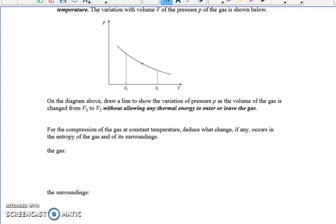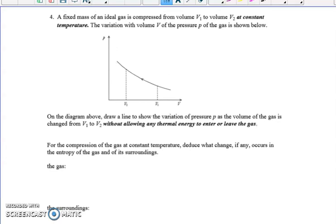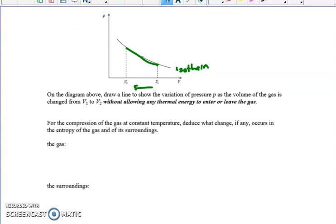So let me do one more here and then I'll ask you to try the last of the problems on your own. So we'll go back to a PV diagram. Let me just check something here for a second. All right, I'm good on time. So we have a fixed ideal gas that's compressed from volume one to volume two. So we have something like that and the volume is going down, that's why it's a compression and it's at constant temperature. So this is an isotherm. Now, it says on the diagram, draw a line to show the variation and pressure as the volume of the gas is changed from V1 to V2, so the same thing, except there's no thermal energy allowed to enter or leave the gas.